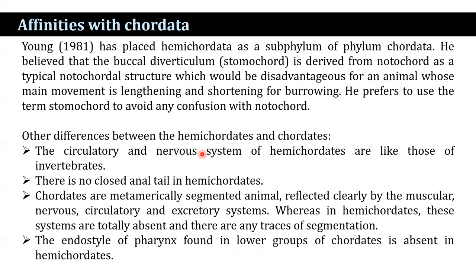Young (1981) placed Hemichordata as a subphylum of phylum Chordata and believed that the buccal diverticulum (stomochord) is derived from the notochord as a typical notochord structure, which would be disadvantageous for an animal whose main movement is lengthening and shortening for burrowing. He preferred the term stomochordata to avoid confusion with notochord. Other differences: the circulatory and nervous systems of Hemichordata are like those of invertebrates, and there are no close annulities in Hemichordates. Chordates are metamerically segmented animals with muscular, nervous, circulatory, and excretory systems showing segmentation, whereas in Hemichordates these systems are totally different with no traces of segmentation.